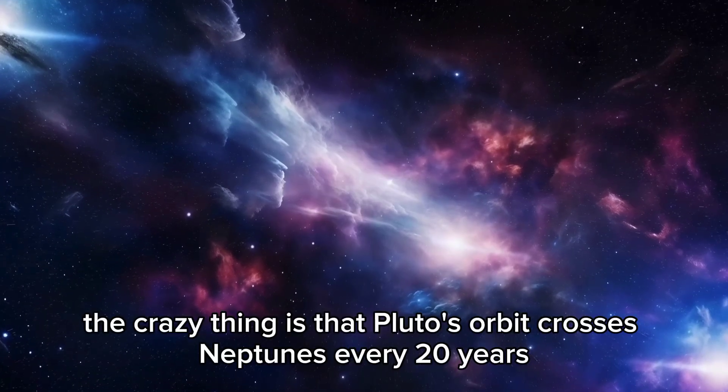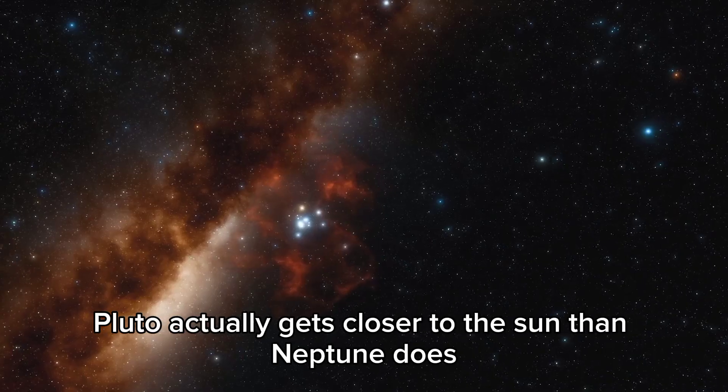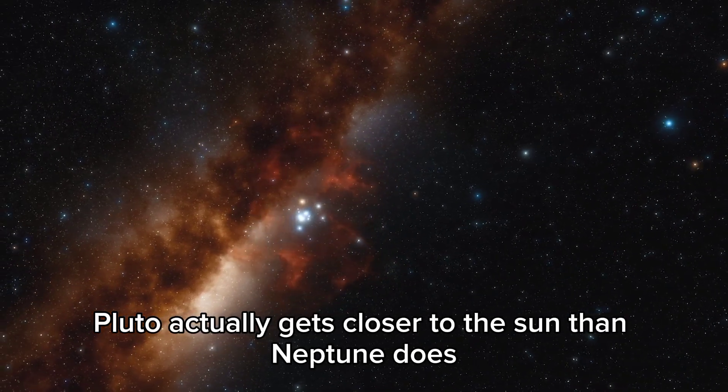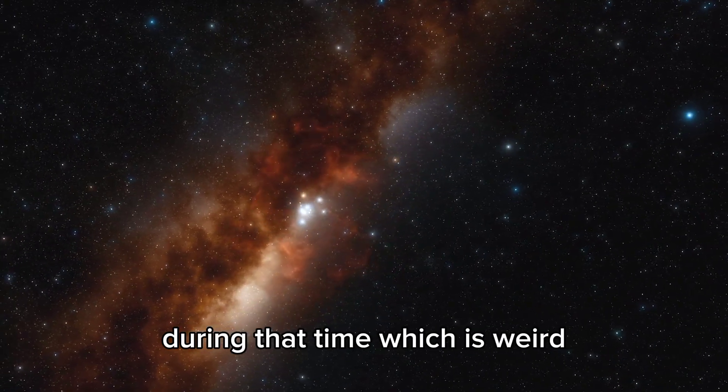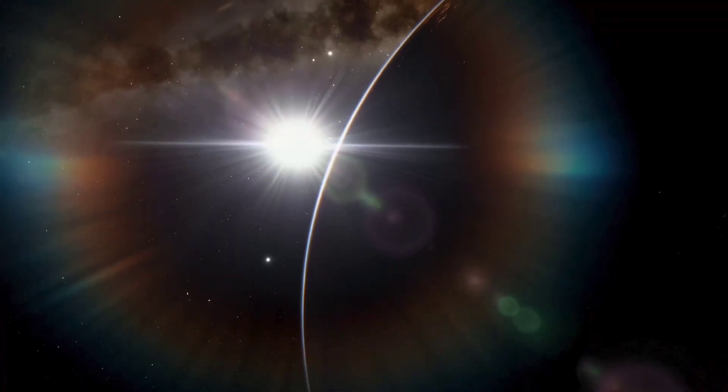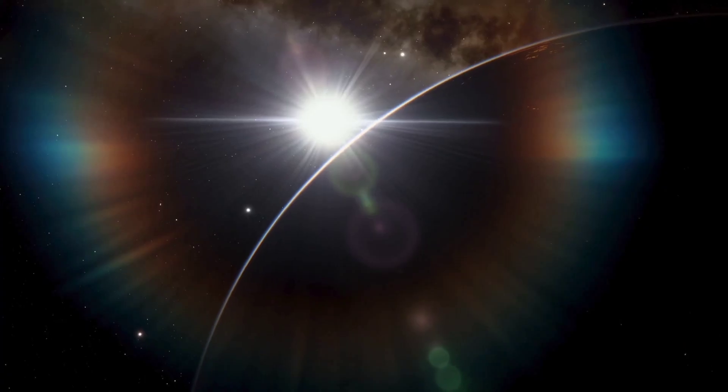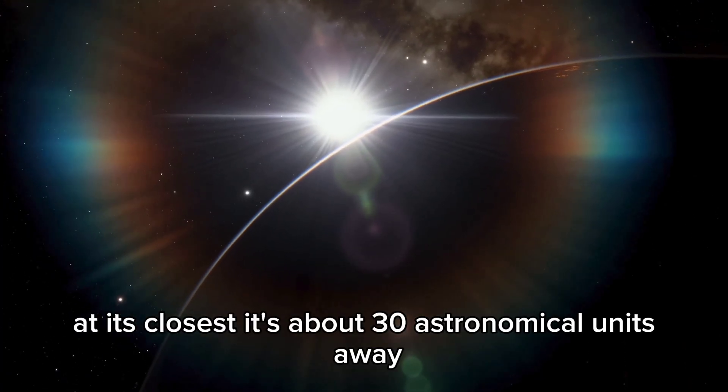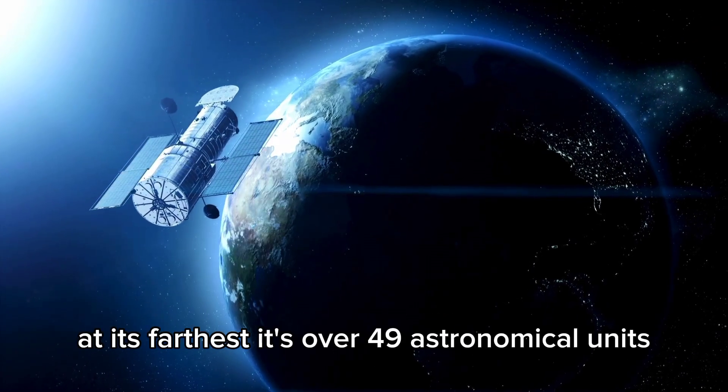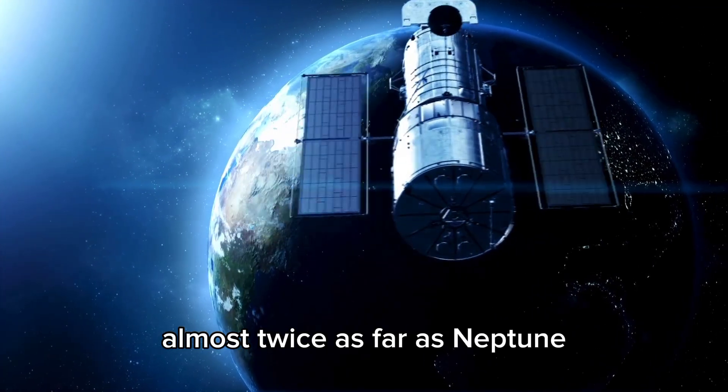The crazy thing is that Pluto's orbit crosses Neptune's every 20 years. Pluto actually gets closer to the Sun than Neptune does during that time, which is weird. Its orbit is definitely not a circle. It's an ellipse, so its distance from the Sun changes a lot. At its closest, it's about 30 astronomical units away. At its farthest, it's over 49 astronomical units, almost twice as far as Neptune.